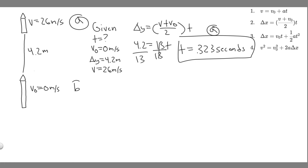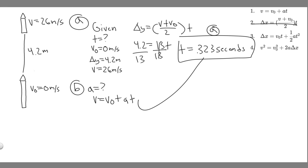Now let's move on to B. For B, we're trying to find the magnitude of the rocket's acceleration. We now know delta Y, V₀, V, and T — four kinematic variables. We can use any equation containing A. The easiest one to use is the first kinematic equation: V equals V₀ plus A times T. We have V, V₀, and T, so all we have to do is plug in and solve.